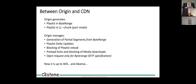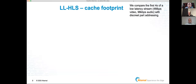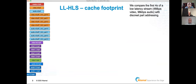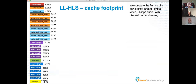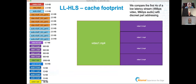From a CDN perspective, we care about the cache footprint at the edge. Imagine a low latency HLS stream with four-second segments and one-second parts. Over a four-second window, all individual objects appear at our edge cache — video segments, video parts, audio segments, audio parts, and playlist updates. For example: four megabit per second video, 96 kilobits per second audio. This is our footprint.